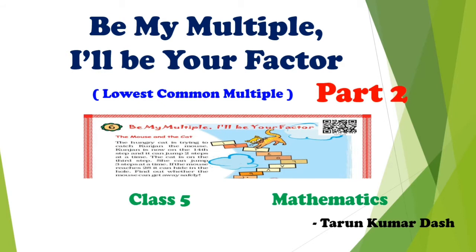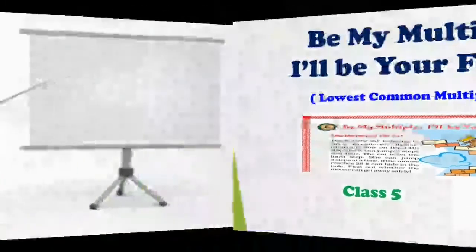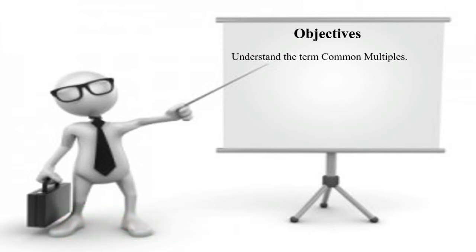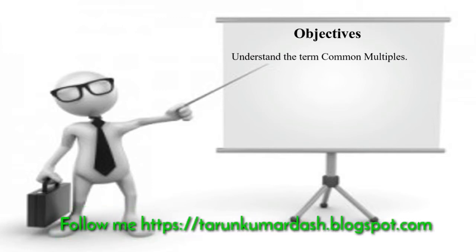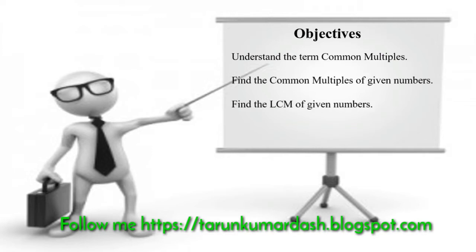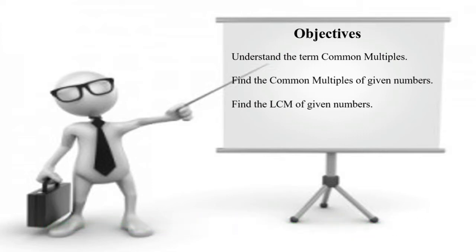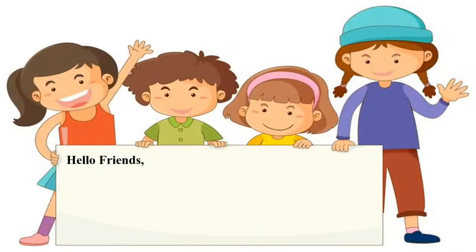Before going to the lesson, let us find out the objectives. Number 1: understand the term common multiples — common multiple kya hai, us ke baare mein samajh paayenge. Number 2: find the common multiples of given numbers. Number 3: find the LCM of given numbers — Lowest Common Multiple, jisko LCM bhi kaha jaata hai, usko calculate kar paayenge.